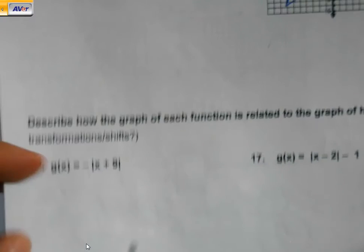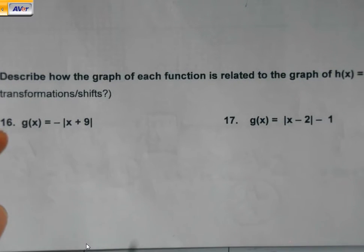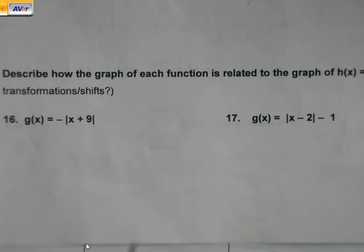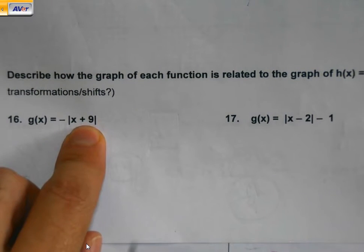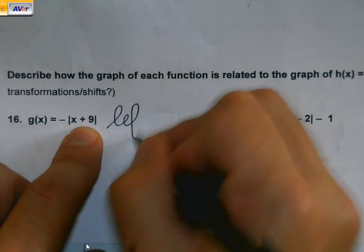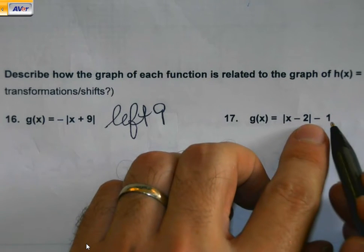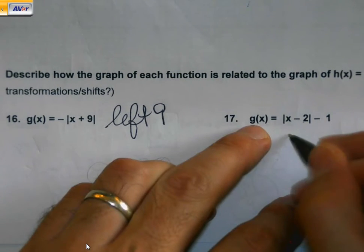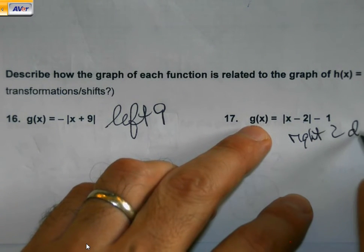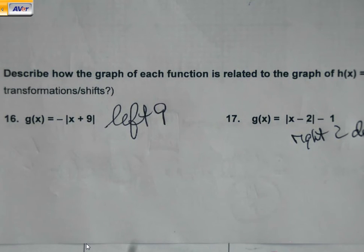To wrap it up, describe how the graph of each function is related to the graph h of x. What are the transformations or shifts? There may be one. There may be two. What's that plus 9 mean? It's inside. So left 9. x minus 2 minus 1. What do these both mean? Right 2. Down 1. And guess what? You've made it to the end. This is exactly what the quiz is going to look like. Go back. Look at it again. Grab an extra review. Go back and finish your homework if you haven't done it. But be ready for this. Because now that you've basically seen the quiz, there's no reason not to do well.